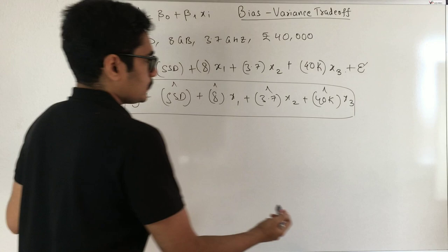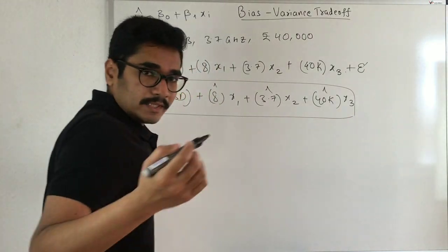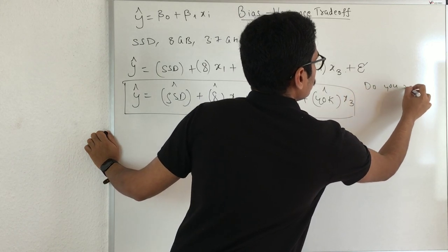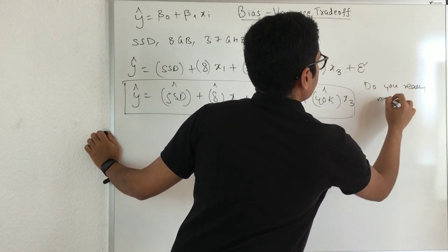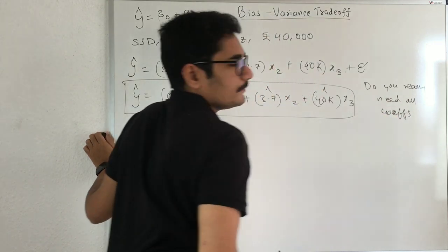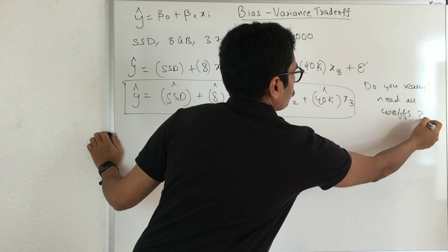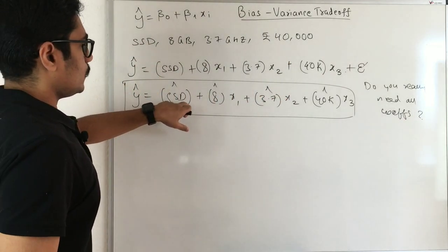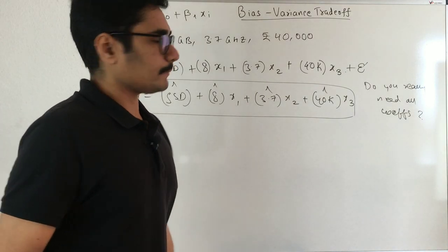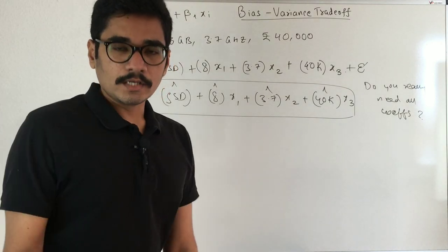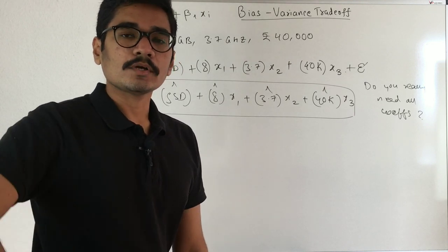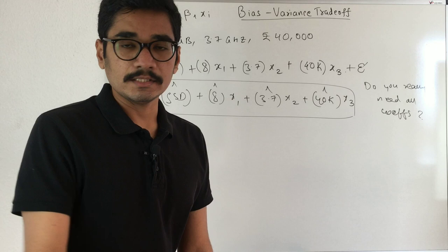Now my question is, do you really need all these coefficients? Since you have 1, 2, 3, and 4 coefficients, do you really need 4 coefficients for your model to predict? In some cases, if you make all the coefficients as strict, it will say I want all the coefficients then only I can make the prediction.